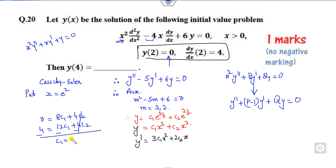When c₁ is 1, what is the value of c₂? Substitute c₁ = 1 here, and c₂ will be -2. Therefore, y = x³ - 2x².